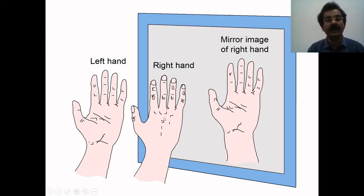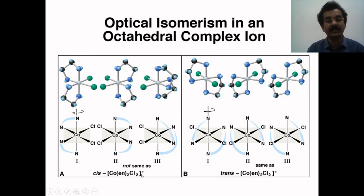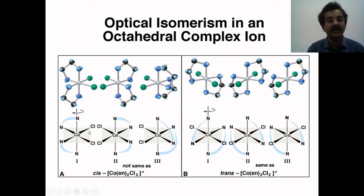Consider the example of a palm: the left and right hands look like mirror images of each other. On the basis of this mirror image phenomenon, complex compounds can be studied as optical isomers. For optical isomers in octahedral complexes, one of the best examples is dichlorobisethylenediamine cobalt-3. There are three types of structure, and in almost all three isomers, the ethylenediamine rings are in cis position near to each other, and the two chloride ligands are adjacent to each other. Therefore, all three come in the category of cis isomers.